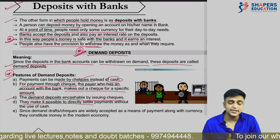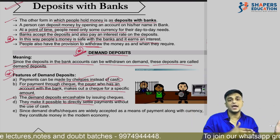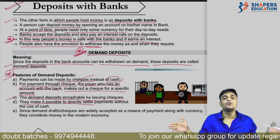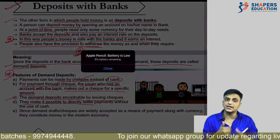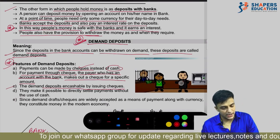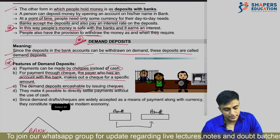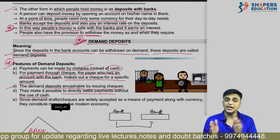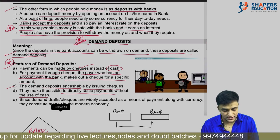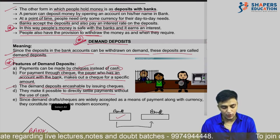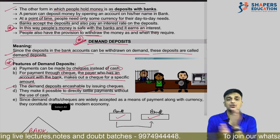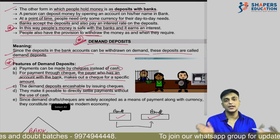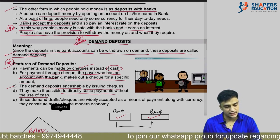Cheques make it possible to directly settle payments without the use of cash. The person who needs to pay writes a cheque in the recipient's name, and the amount transfers bank to bank — no cash needed. Since demand drafts and cheques are also accepted as a medium of exchange, demand deposits are also considered a form of money, along with currency.